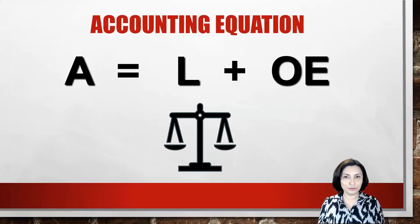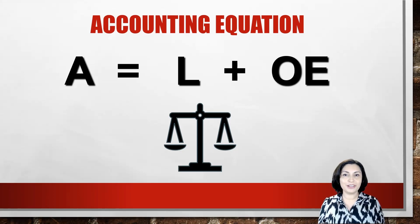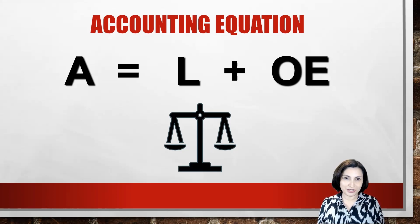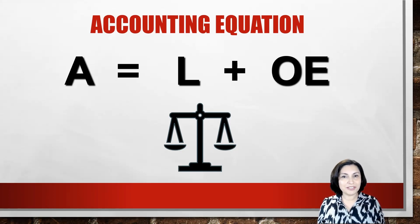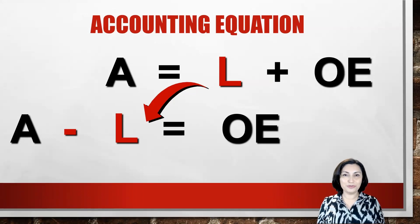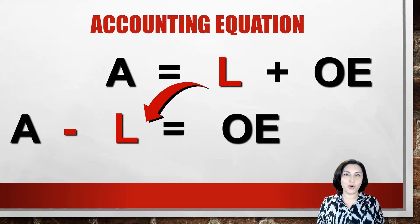The balance is placed on the side with the greater dollar amount. Before looking at the rules of debit and credit, let's look at the accounting equation: assets are equal to liabilities plus owner's equity. Note that assets are on the opposite side of the equation from liabilities and owner's equity. To review, the left side of a ledger account is always called the debit and the right side is always called the credit.